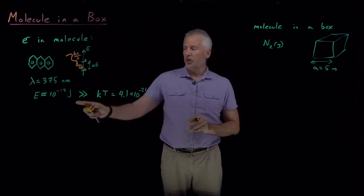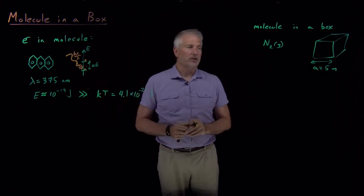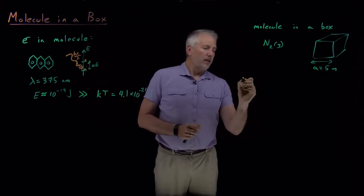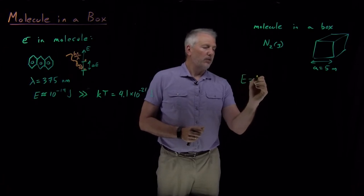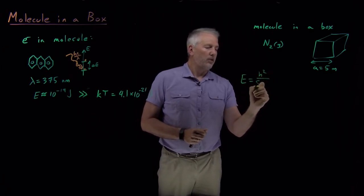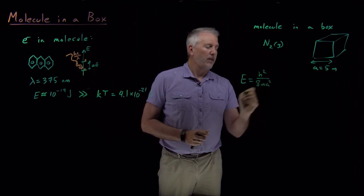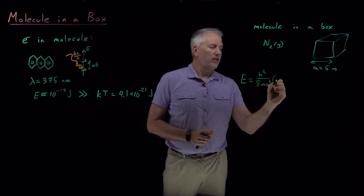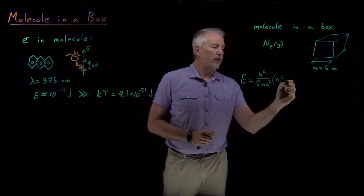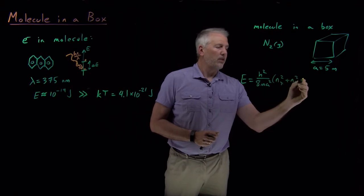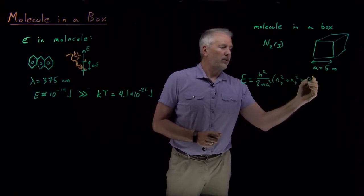So we can ask similar questions. What's the difference in energy levels for that system? To do that, we need to know, for a cubic box, the energy levels look like h squared over 8ma squared plus the sum of nx squared, ny squared, and nz squared.